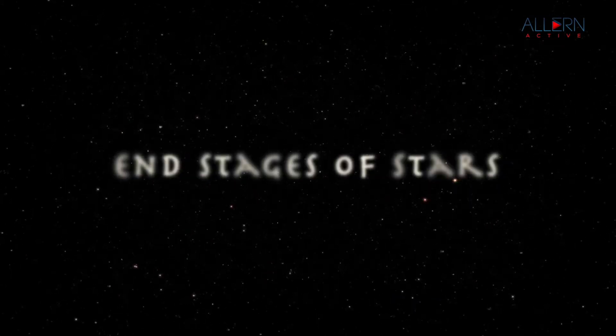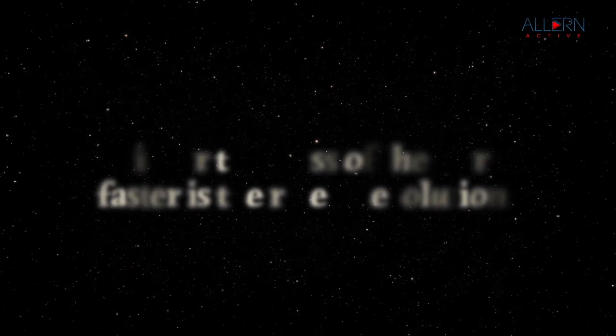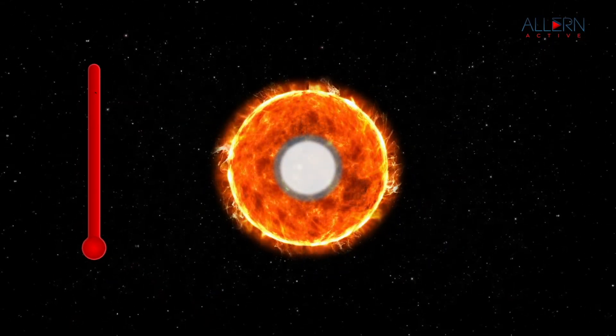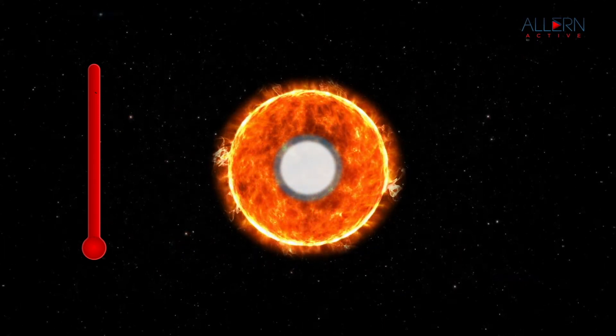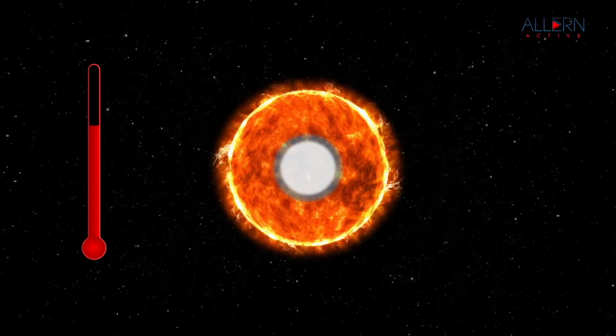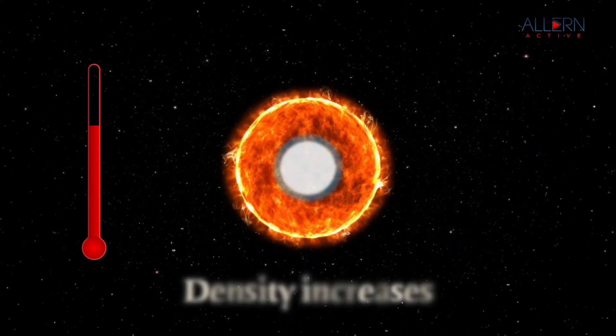Let's begin with the end stages of stars. The higher the mass of a star, the faster is its rate of evolution. The different stages during the evolution of a star — which is the path of evolution — also depends on its mass. When the energy generation stops, the temperature decreases, causing the gas pressure to decrease; the star contracts and its density increases.